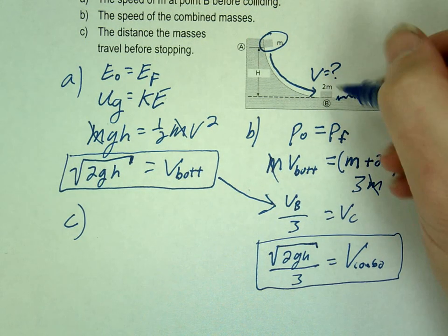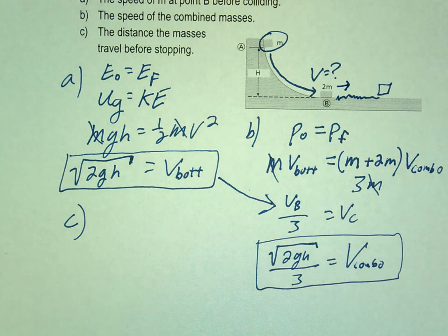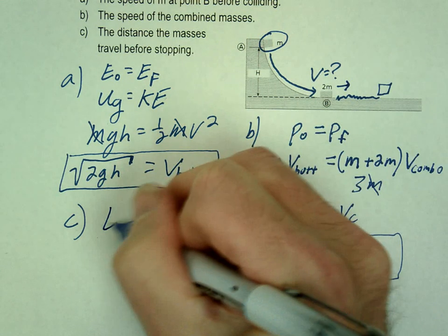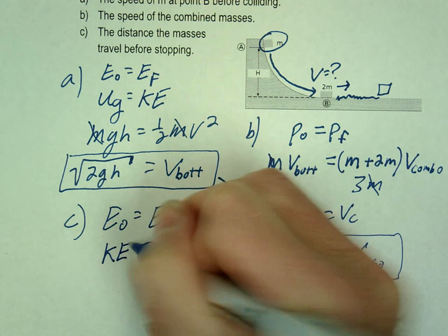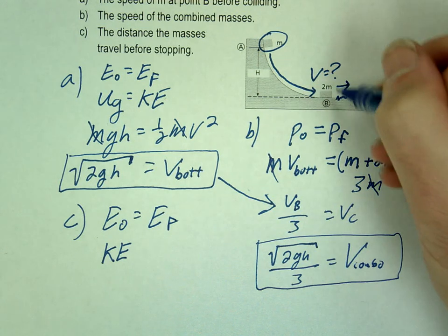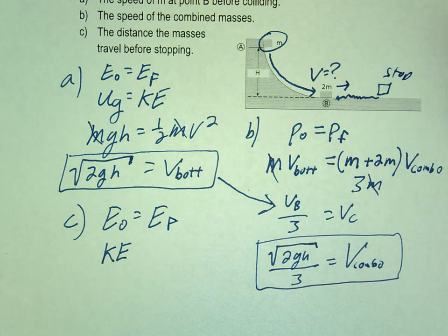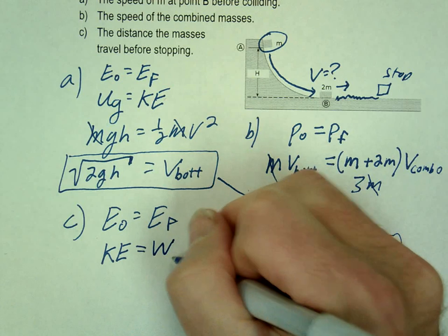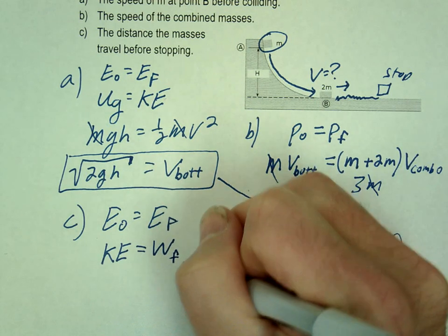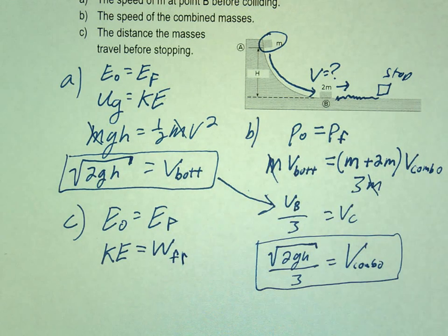So at this point, we have this combo mass moving, right? So what kind of energy do we have at that point? Kinetic energy. That's going to slow down and stop. Where did all that energy go? Friction. Into heat energy, right. So friction did some work, took the energy away. So let's just say all that kinetics is going to turn into work, work of friction.